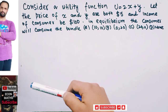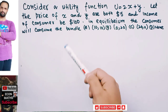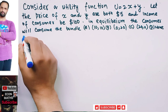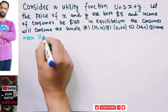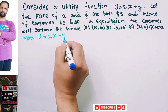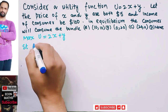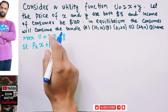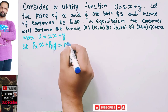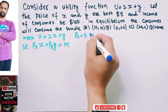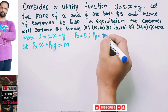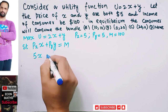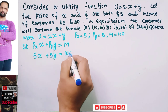We need to find the equilibrium — the optimal combination of x and y — which means we need to maximize the utility function U = 2x + y, subject to the budget constraint. The budget constraint is: price of x times units of x plus price of y times units of y equals income. With Px = $5, Py = $5, and income = $100, we get: 5x + 5y = 100.